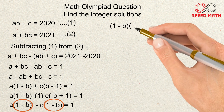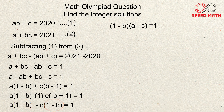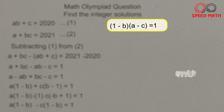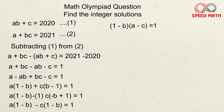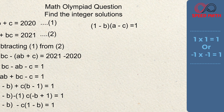Now we can take (1 − b) common, giving (1 − b)(a − c) = 1. This is an Olympiad question with three unknowns, so we use a different approach. The product of two brackets equals 1, so there are two possibilities: either both brackets equal 1 (1 × 1 = 1), or both equal −1 (−1 × −1 = 1).